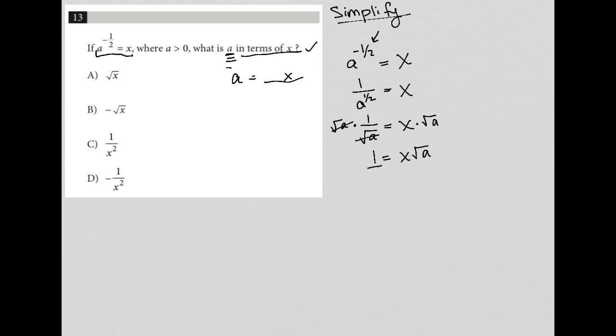Now I'm going to divide both sides by x, so I have one over x equals square root a. Lastly, I'm going to raise each side to the second power because that's how I get rid of the square root and isolate my a.